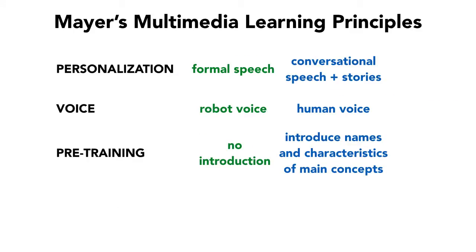Personalization says that formal speech does more poorly than conversational tones, because formal speech has to be converted into something that you understand, and then you have to go and understand the concept behind it too — so it just adds more things to do. Robots' voices do worse than human voices. And finally, if you introduce the names and key concepts ahead of time, then people are able to learn better.